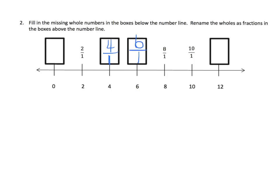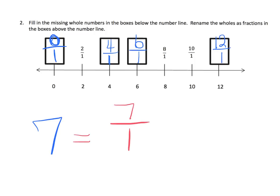We can finish: four wholes is four over one, six wholes is six over one, and twelve wholes is twelve over one. What would zero wholes be? It would be zero over one. We want students to start recognizing that for any whole number — like seven — that's going to be equal to the fraction seven over one.